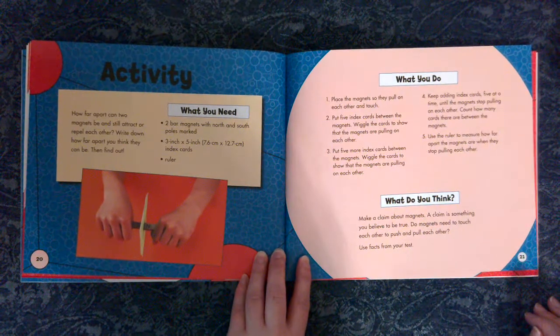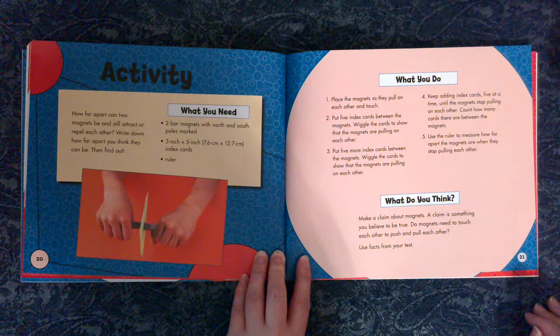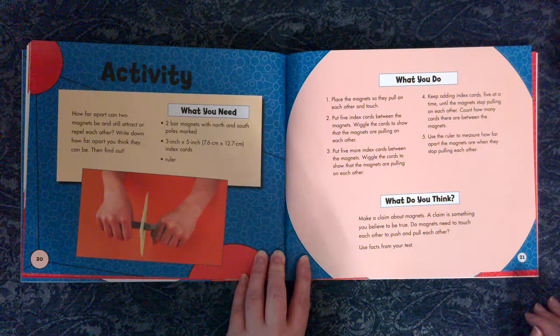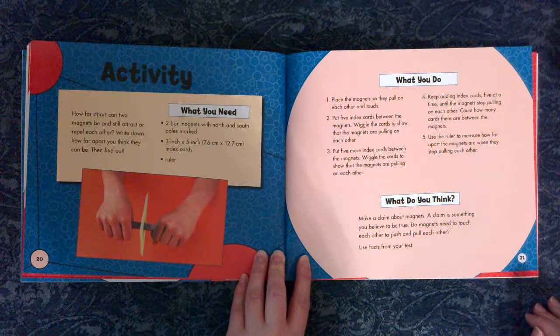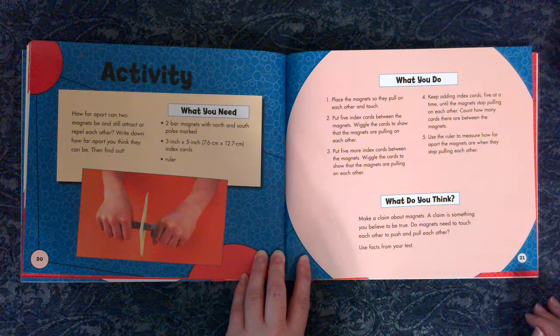What you need. Two bar magnets with north and south poles marked. Three inch by five inch, 7.6 cm by 12.7 cm index cards. Ruler.